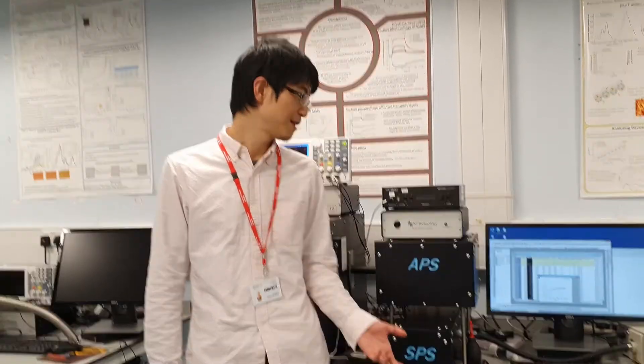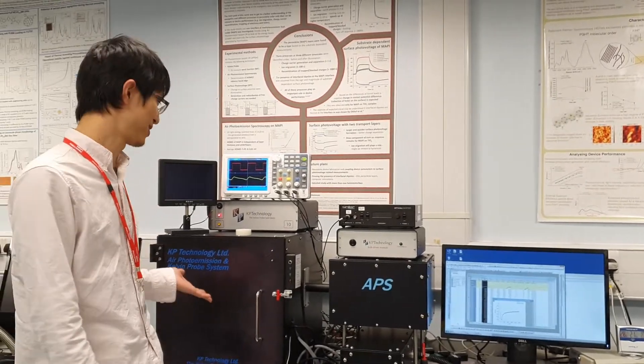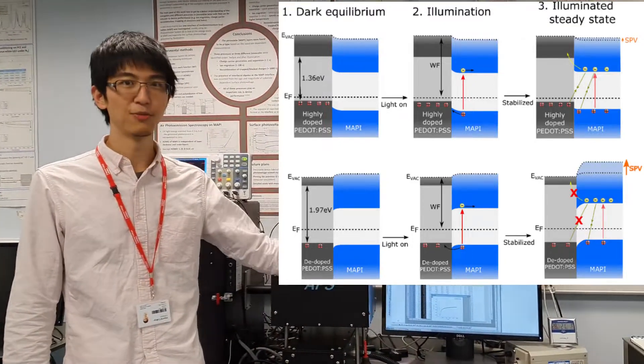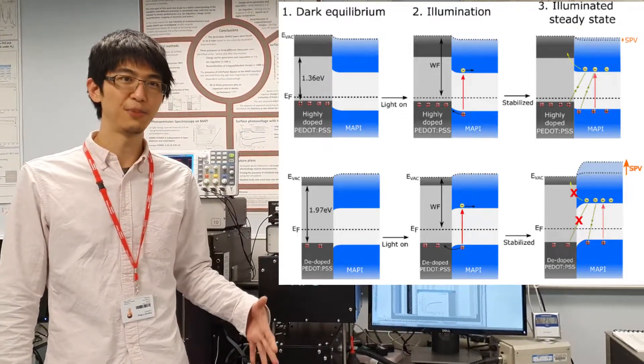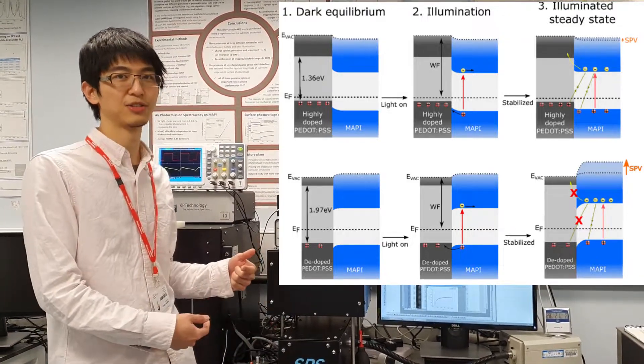For the last part, we have to confirm how the interfacial recombination is changed in the system. So here I'm standing in front of our APS system. It has a really sophisticated, complicated system that combines multiple light sources and also combines a very sensitive tip inside. Sorry, I cannot open it because it's actually operating now. So by shining different light with the on-and-off period, we can check how the charges are generated and redistributed in our solar cell system.